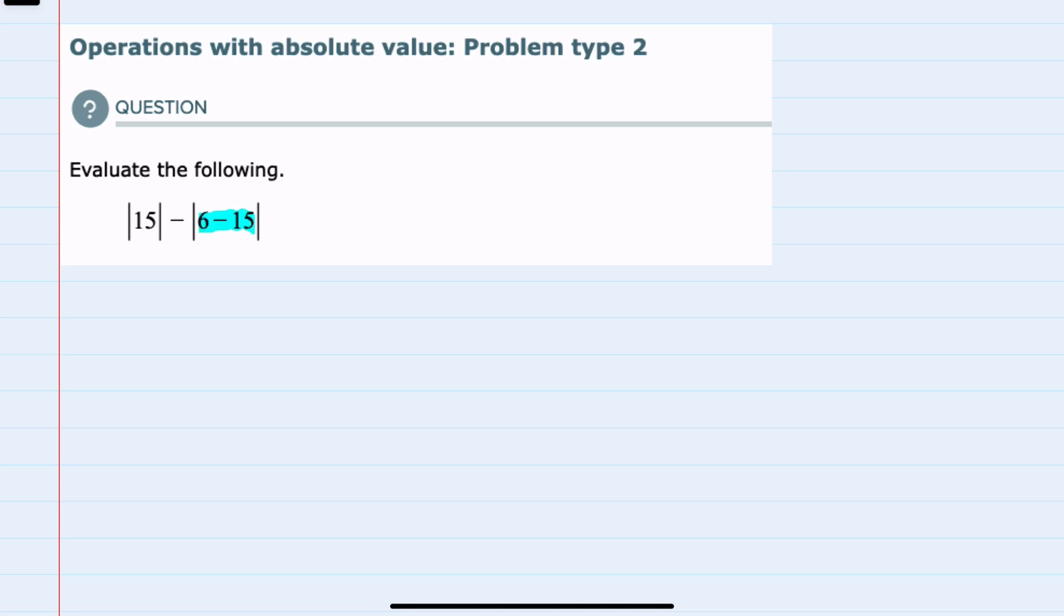So we will start by simplifying what's inside that absolute value, bringing down the first part. The 6 minus 15 would simplify to negative 9, and from here I can evaluate the first absolute value.